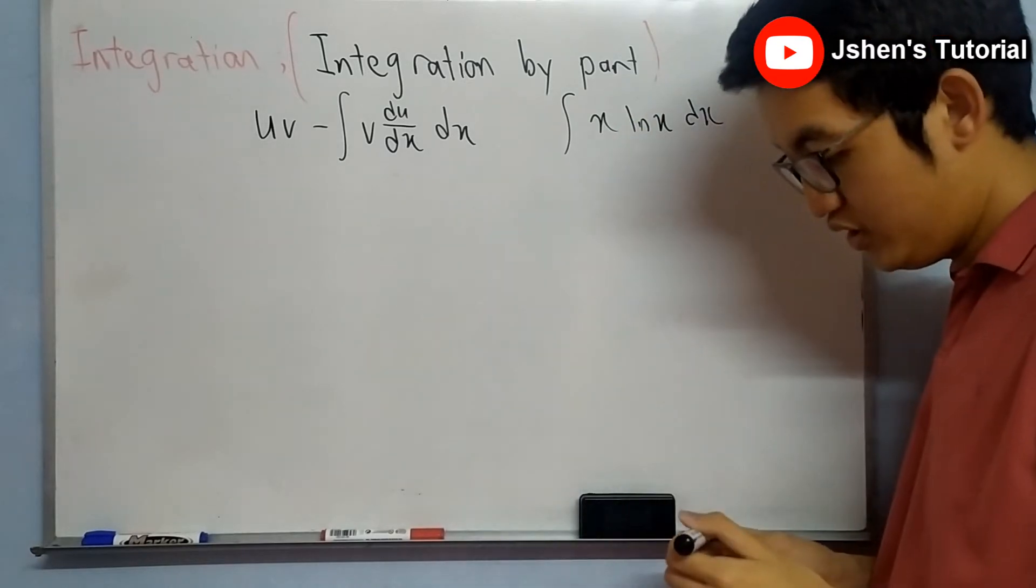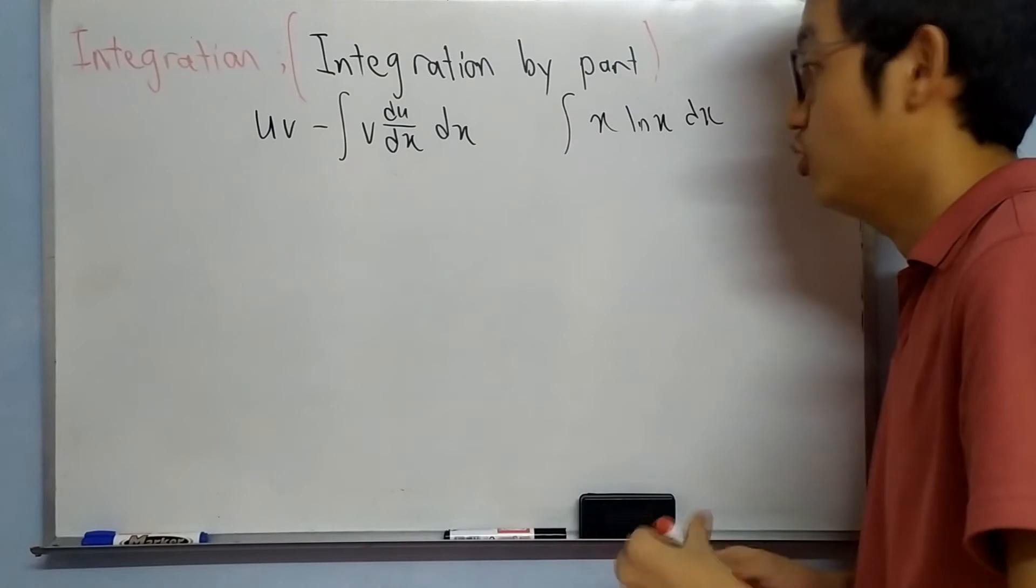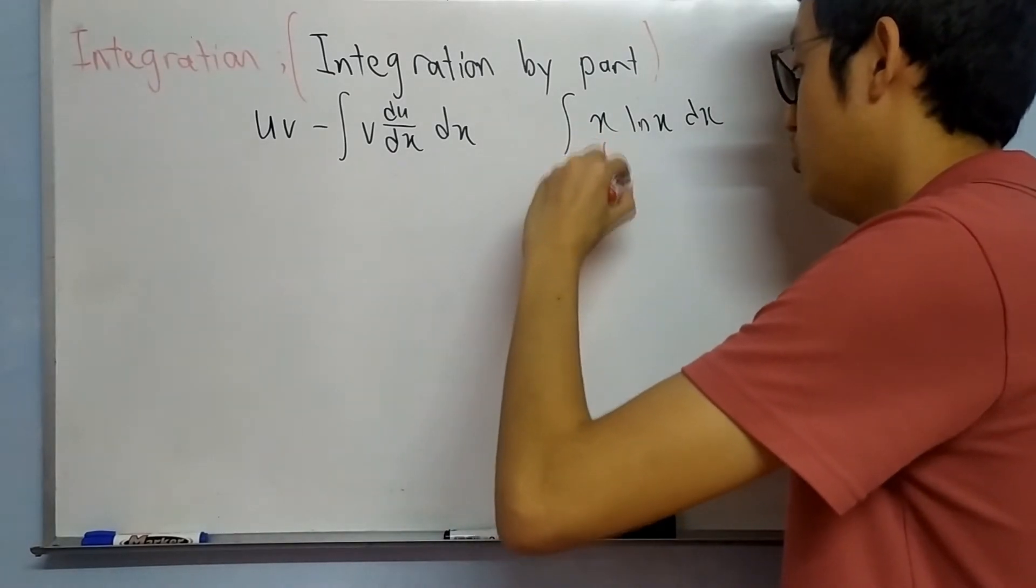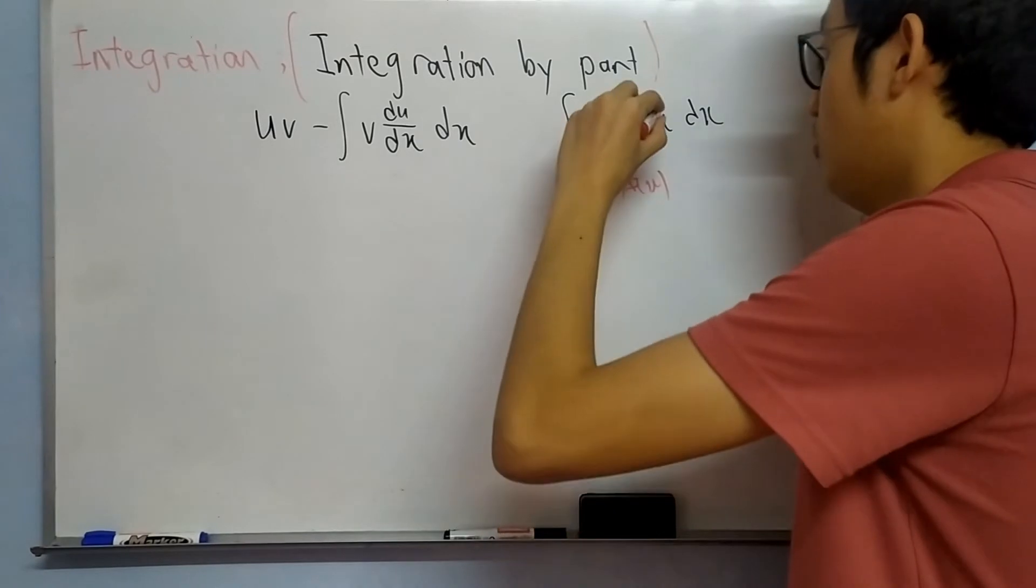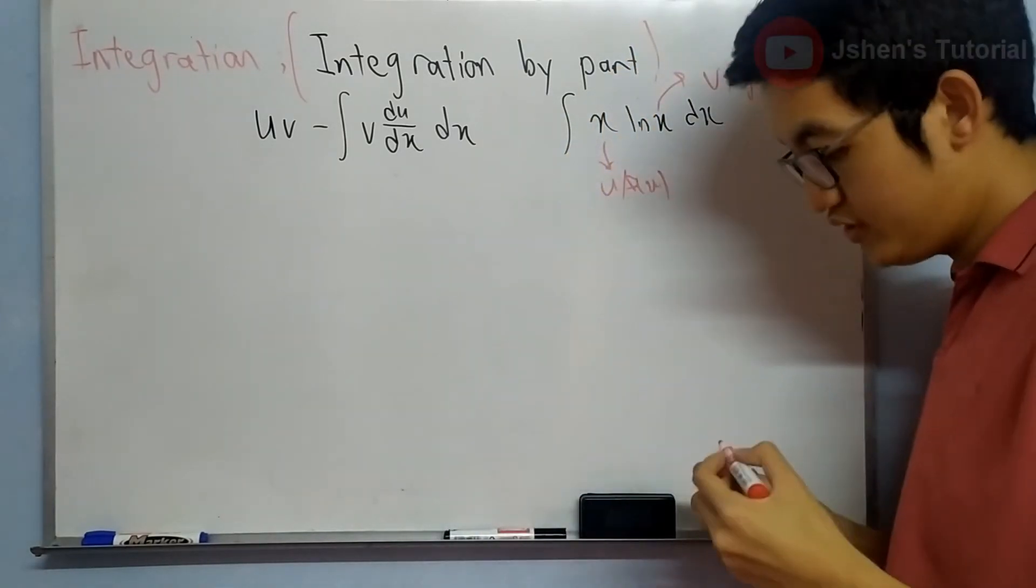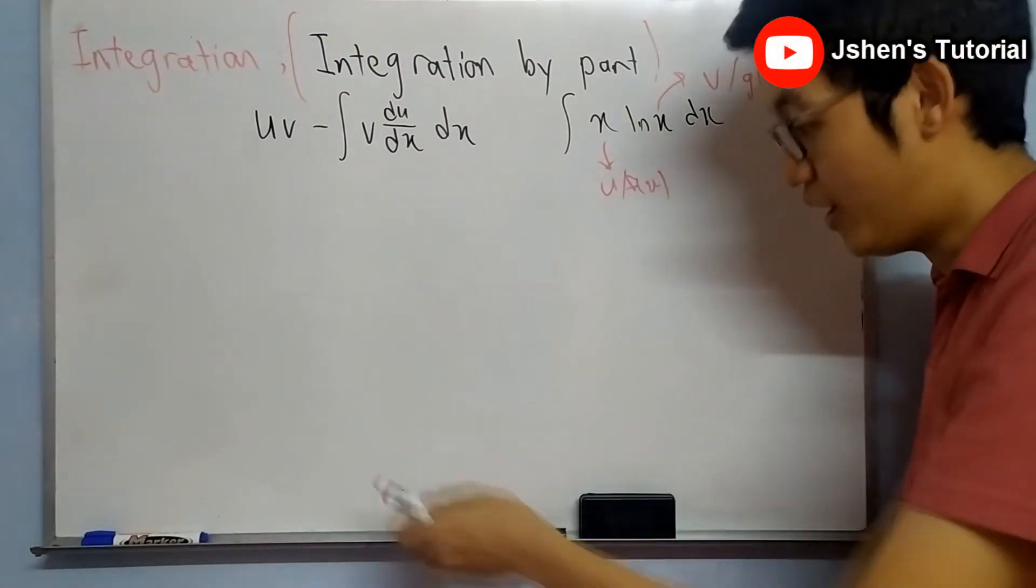As we know, this is the combination of two functions. One is x, one is ln x. This is u or f(x) while ln x is v or g(x). We cannot integrate by using the normal method. Now I'm going to use integration by parts.